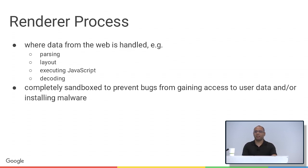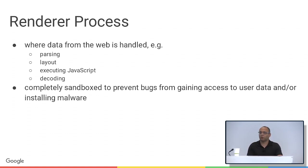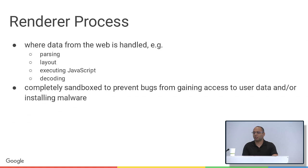The main thing that runs all your web content is the render process. This is where we handle data from the web: parsing HTML, doing layout, executing JavaScript, decoding images, videos, and audio, and so on. It's completely sandboxed, so this is the most locked-down process in the browser.